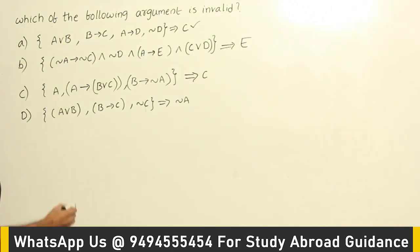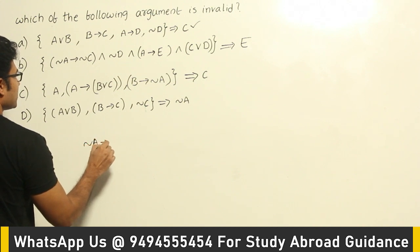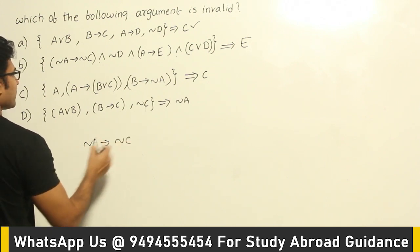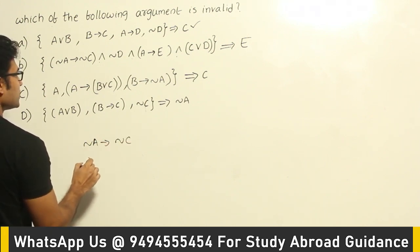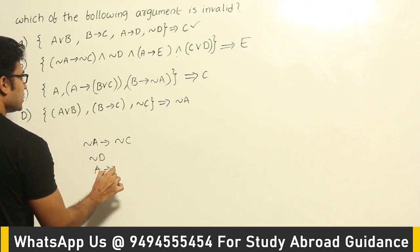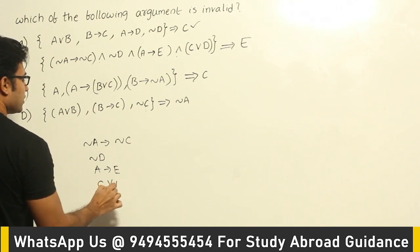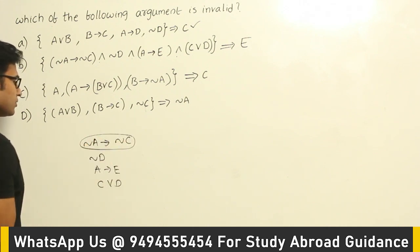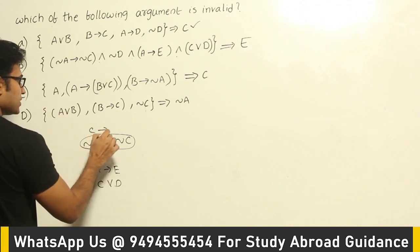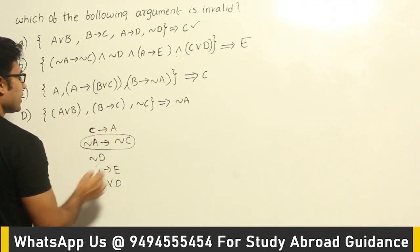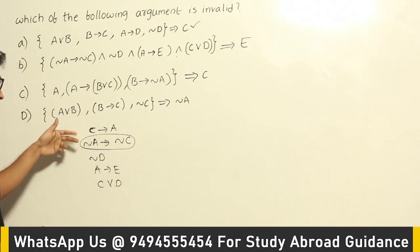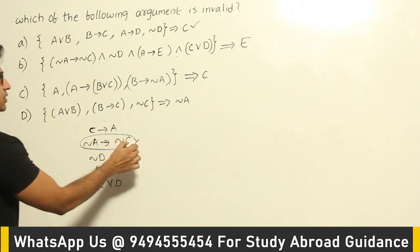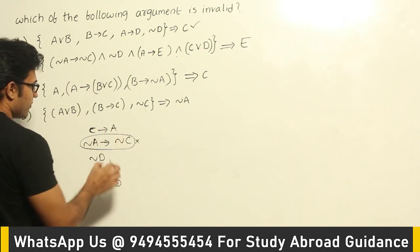Now let's look at option B. The premises are joined by conjunction but you can separate them. The premises include: negation A implies negation C, negation D, A implies E, and C or D. One thing you can do is replace negation A implies negation C with its contrapositive, which makes simplification easier. The contrapositive gives us C implies A — both are logically equivalent.